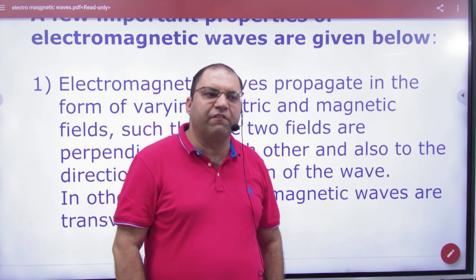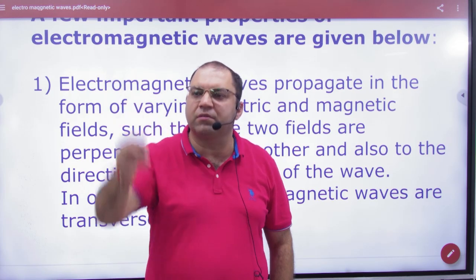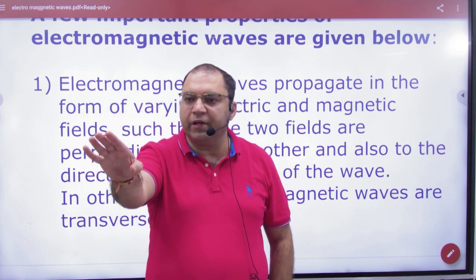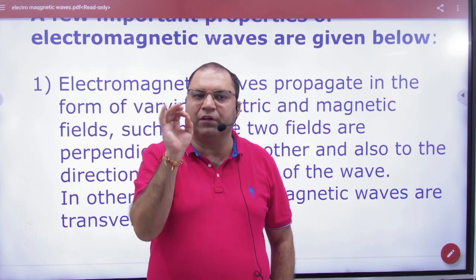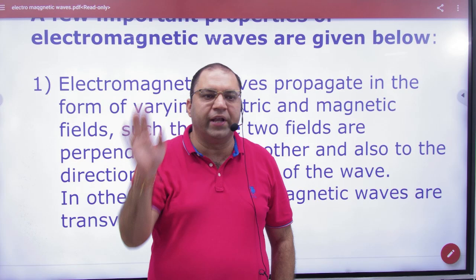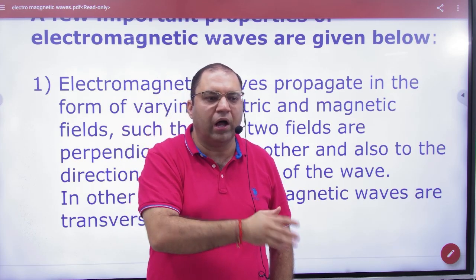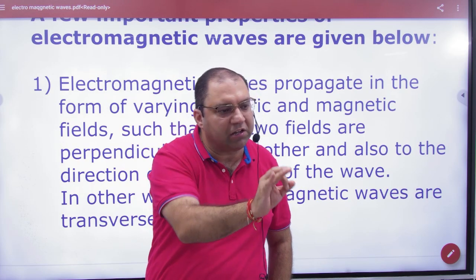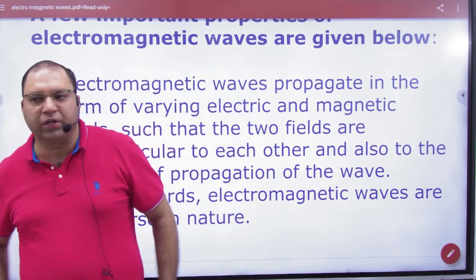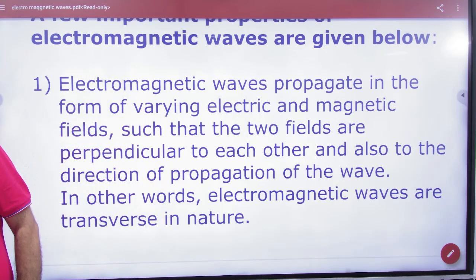90 degree underlines the transverse nature of EM wave. What is the transverse nature of EM wave? Electromagnetic waves are transverse in nature. Electric, magnetic and wave propagation are at angle of 90 degrees. Transverse nature, clear here.